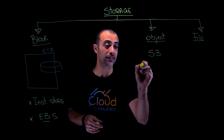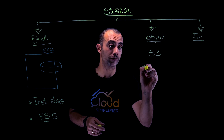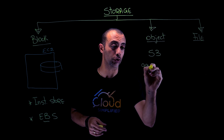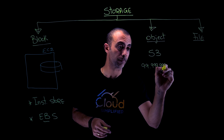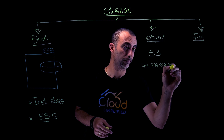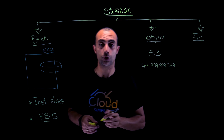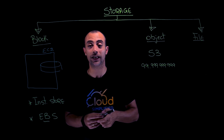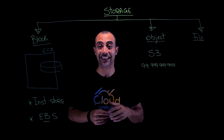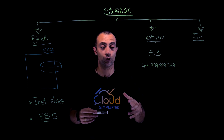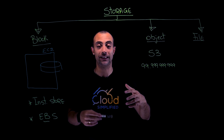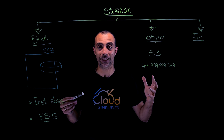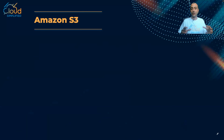S3 has something very unique: its durability. S3 has 11 nines of durability. Theoretically speaking, if you have an object stored in S3, you might lose it maybe once every 10 million years.